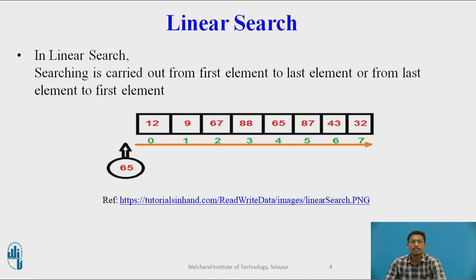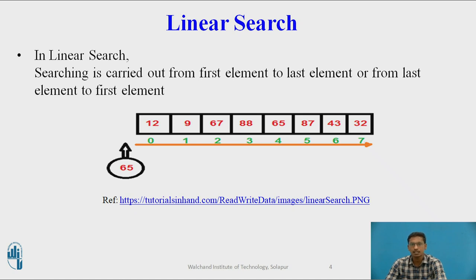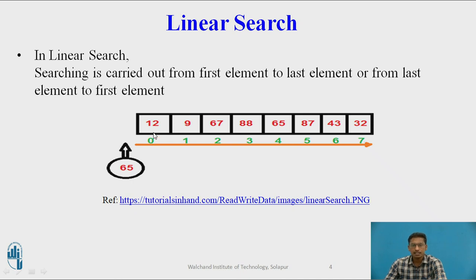First, linear search. In linear search, searching is carried out from first element to last element or from last element to first element — that is, from zeroth index to last index or from last index to first index. If the element is not present in the array, at last we will come to know that the element is not present. For example, suppose we want to search whether 65 is present inside this array. After searching at each and every index, we come to know that 65 is not present inside this array.